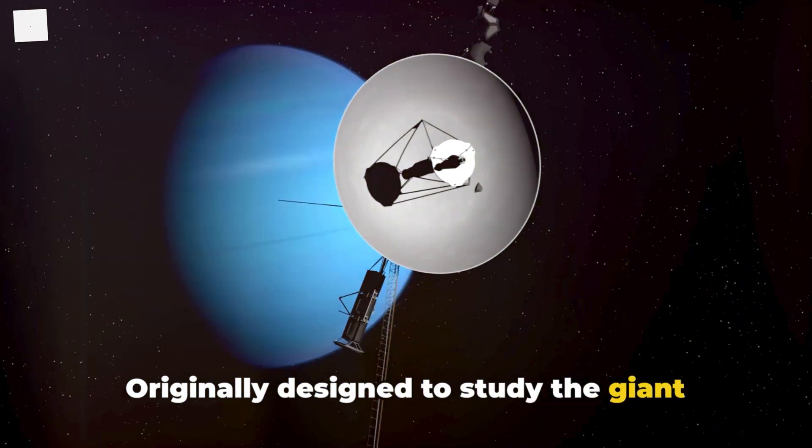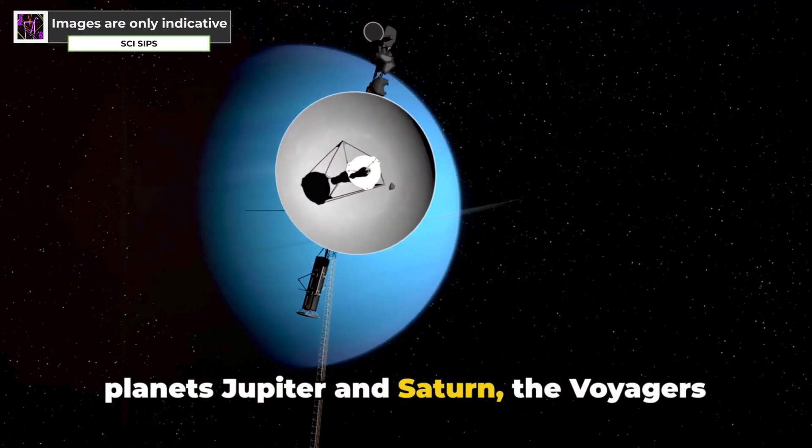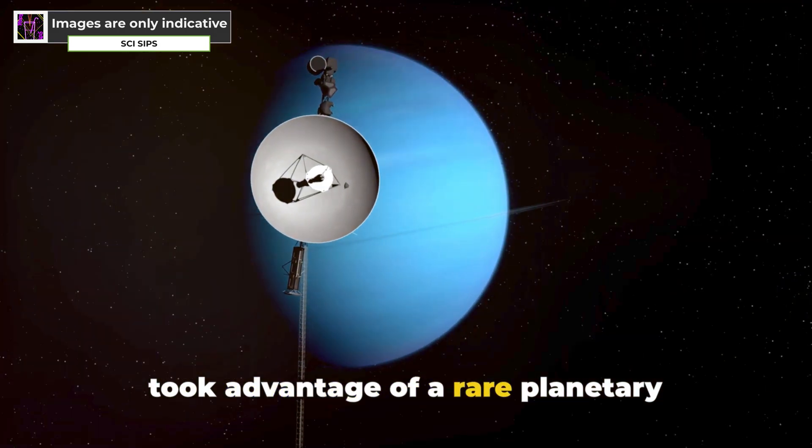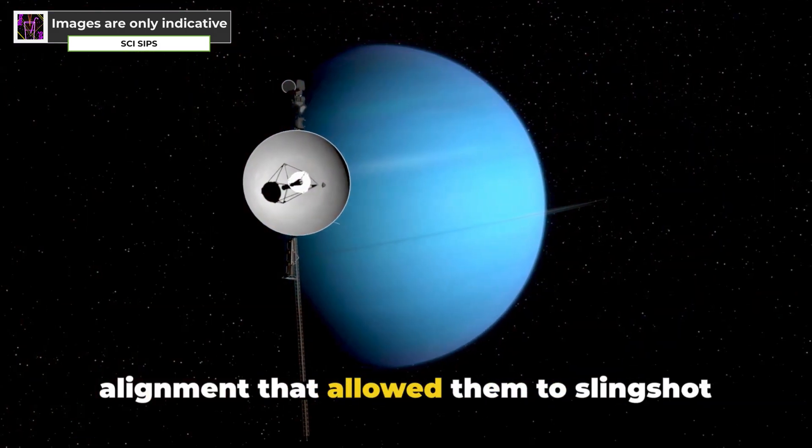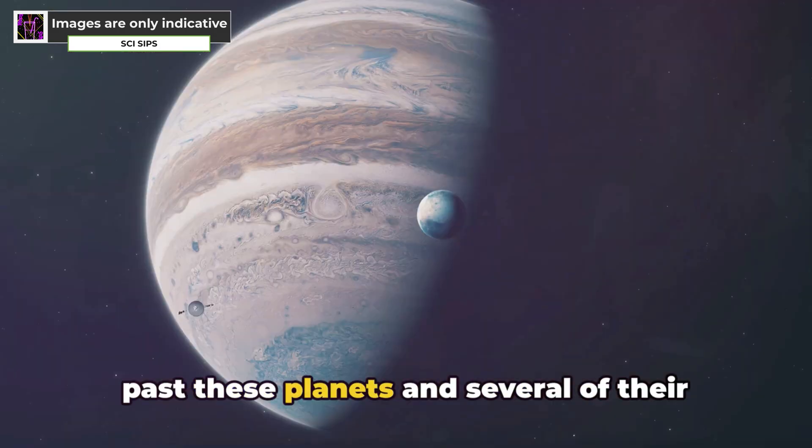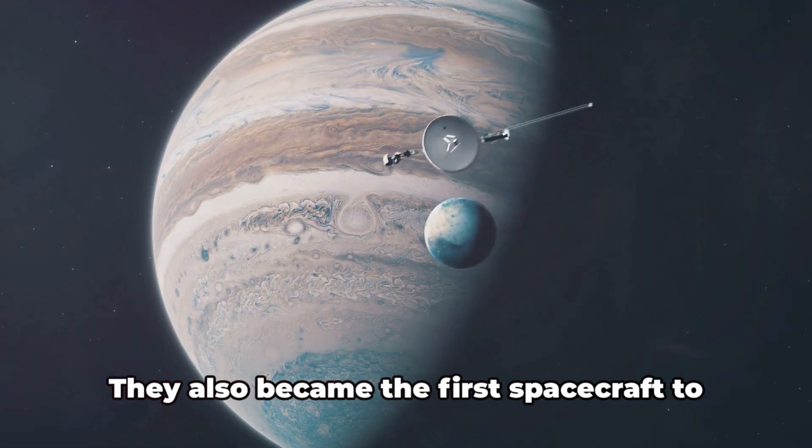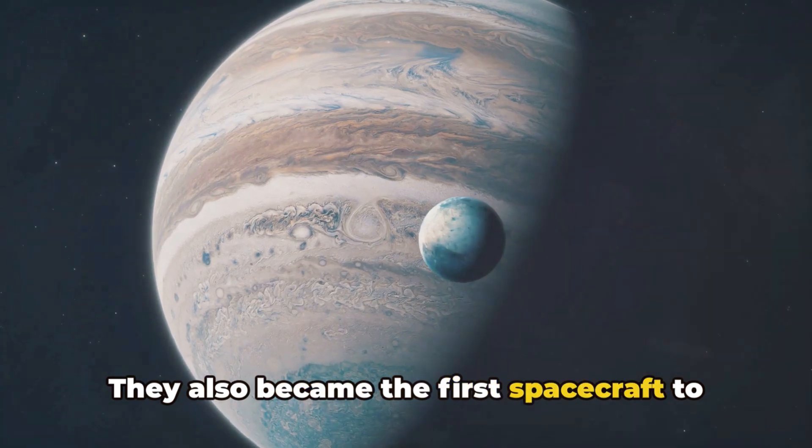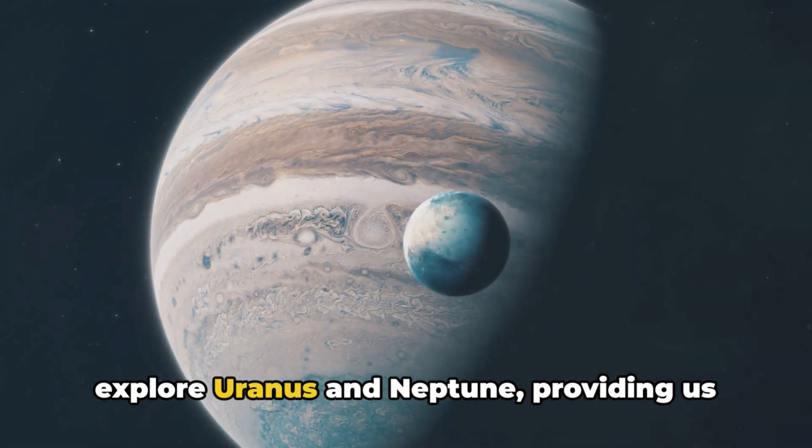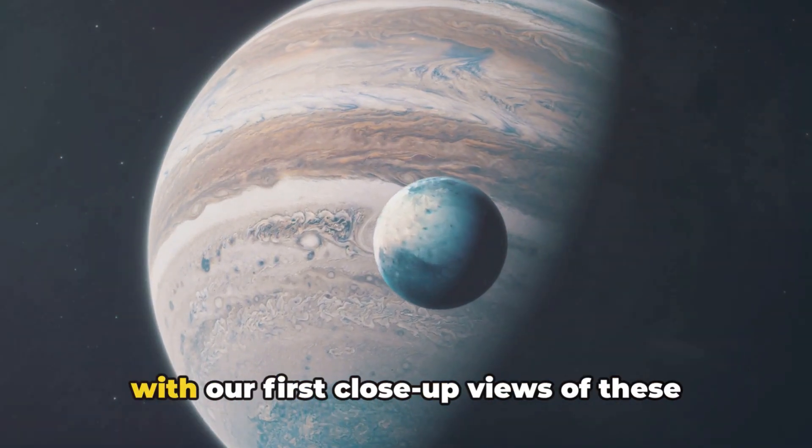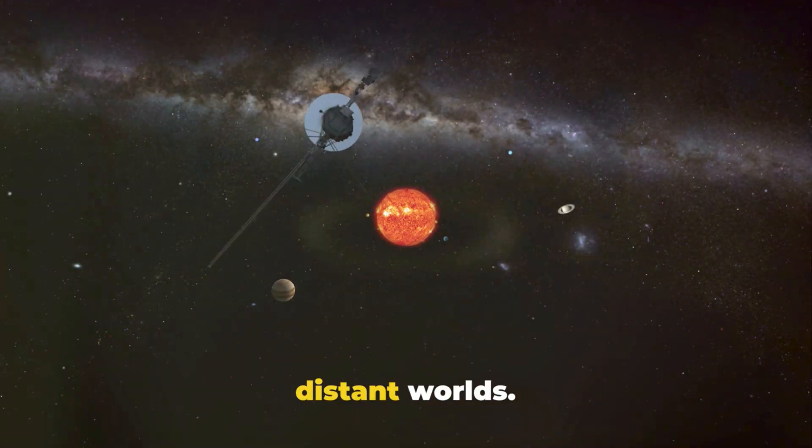Originally designed to study the giant planets Jupiter and Saturn, the Voyagers took advantage of a rare planetary alignment that allowed them to slingshot past these planets and several of their moons, reaping a windfall of scientific data. They also became the first spacecraft to explore Uranus and Neptune, providing us with our first close-up views of these distant worlds.